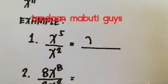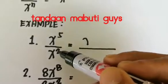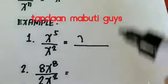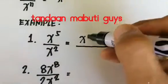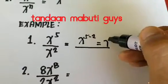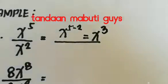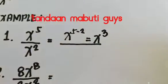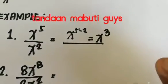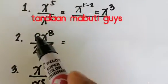For example: x raised to five divided by x raised to two. The answer is x raised to five minus two, which equals x raised to three, or x cubed. So when dividing exponents with the same base, you subtract.